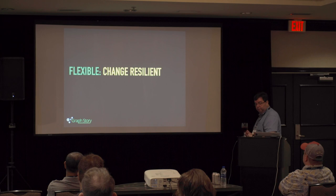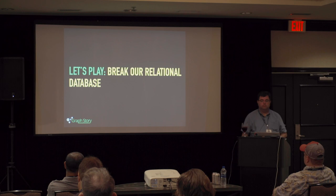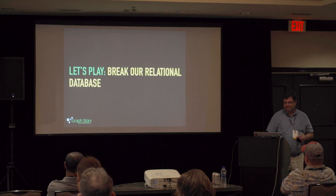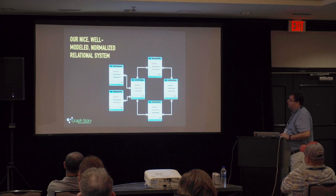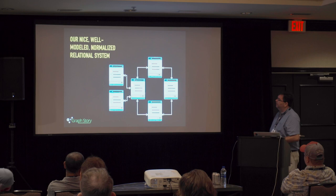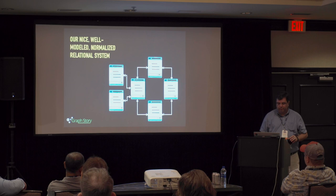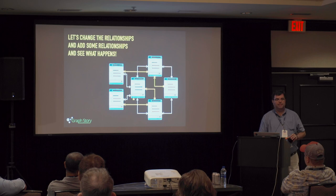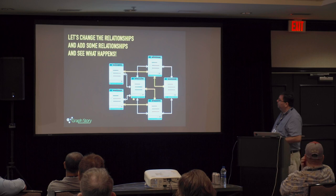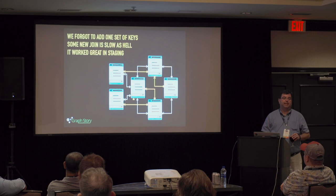Why use graphs? First of all, it's flexible — super flexible and very change-resilient. Has anyone played Jenga before? You're going to go in and take a piece from your nice, well-normalized relational system — don't change it, I don't want any more joins, we just got this one working, we got our indexes right. But then something changes. We forgot to add a set of keys, didn't test it in staging, and it worked fine on my machine.